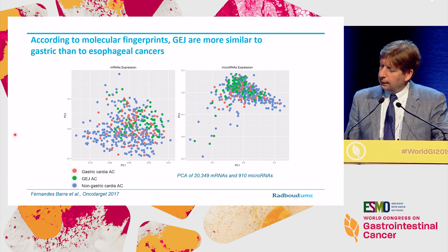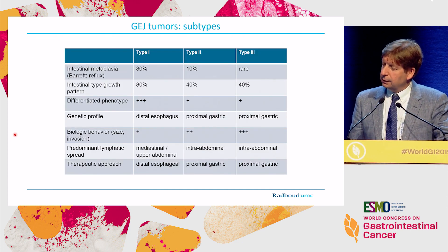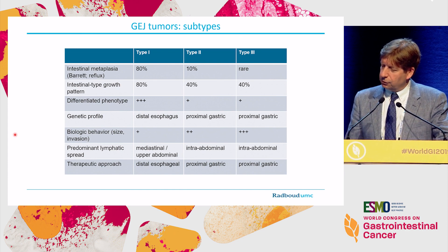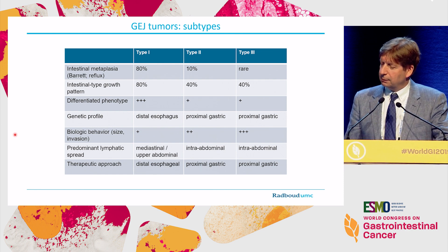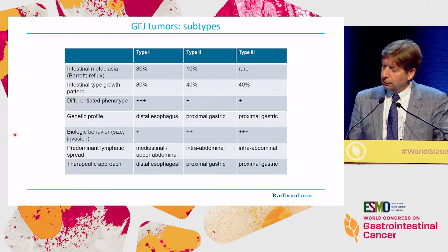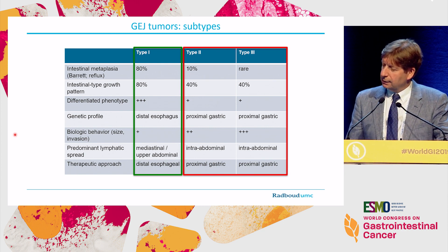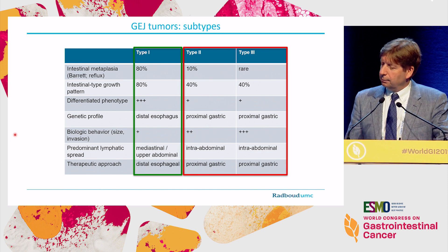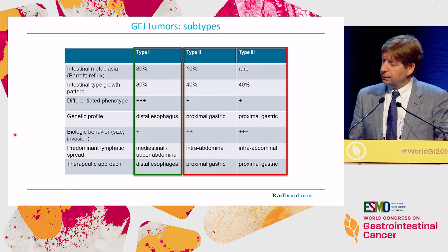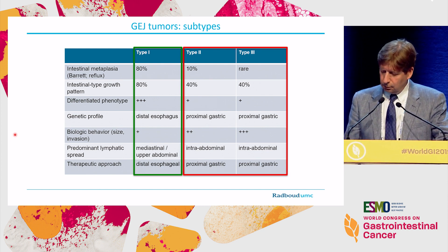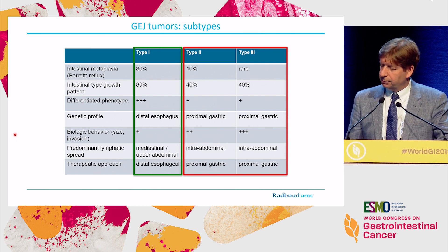This was also confirmed by a study that looked at messenger RNA and microRNA expression in the cardia subtype of GEJ junction tumors, showing that the GEJ junction tumors — cardia, type 2 and type 3 — are more similar to gastric than to esophageal cancer. There seems to be a distinction between type 1 on one hand and type 2 and type 3 on the other, which may pose the question whether these different subtypes require a different therapeutic approach.